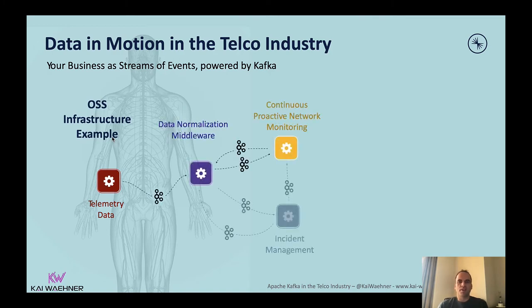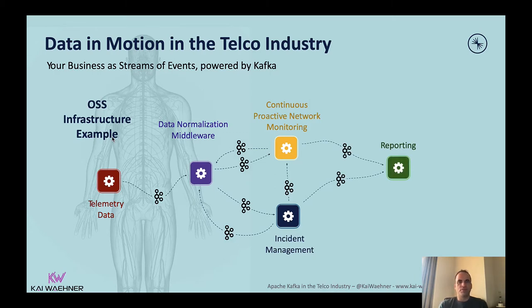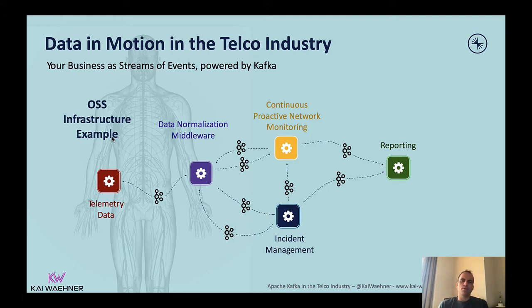Here's a high-level overview of data in motion in the telco industry using an OSS infrastructure example. On the left side we have all the telemetry data from syslogs, firewalls, and various interfaces. You need to process, normalize, and aggregate all the different technologies and data formats. Then you can continuously and proactively do network monitoring in real time, act on incidents — whether through human interaction or automated response — and also do reporting on past events. The key difference with data in motion is that most of this happens in real time, so you can act when the data is hot.